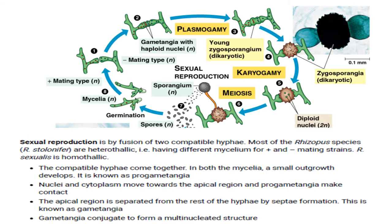Sexual reproduction is by the fusion of two compatible hyphae. Most Rhizopus species, especially Rhizopus stolonifer, are heterothallic, meaning they have different mating strains — positive and negative. Compatible hyphae come together and a small outgrowth develops, known as progamotangia. The nuclei and cytoplasm move toward the apical region, and the progamotangia make contact. The apical region is then separated from the rest of the hyphae by septa formation, and this structure is called gametangia.